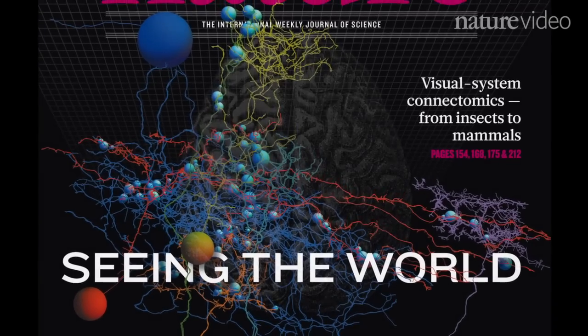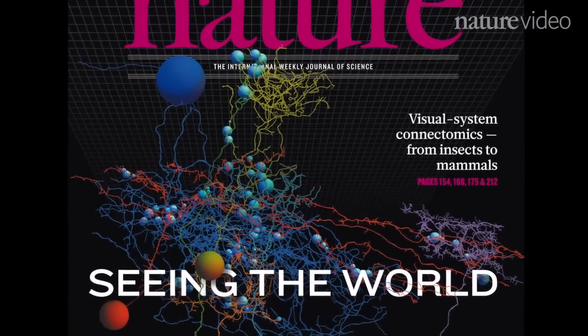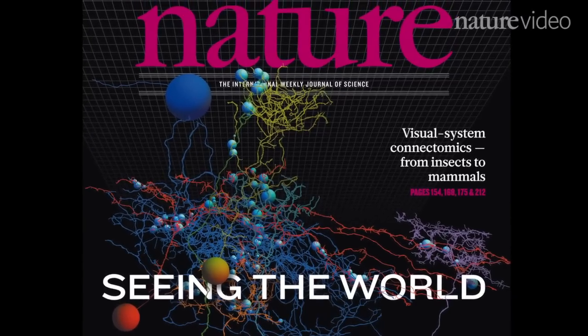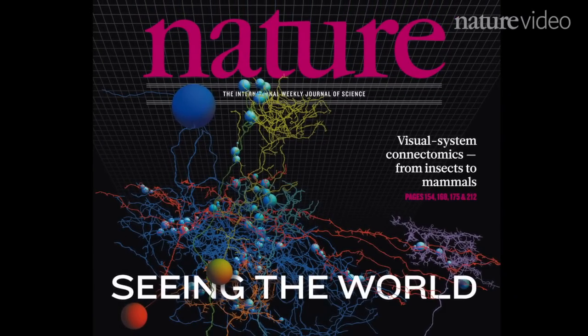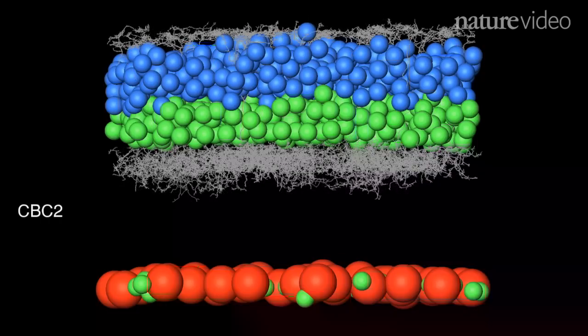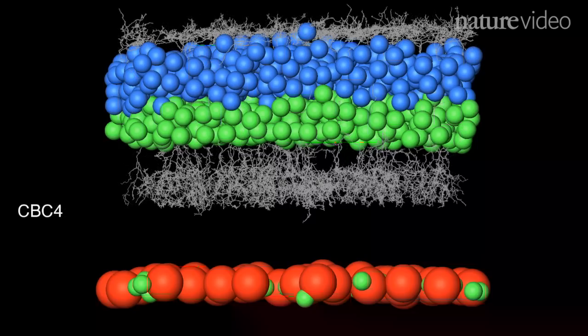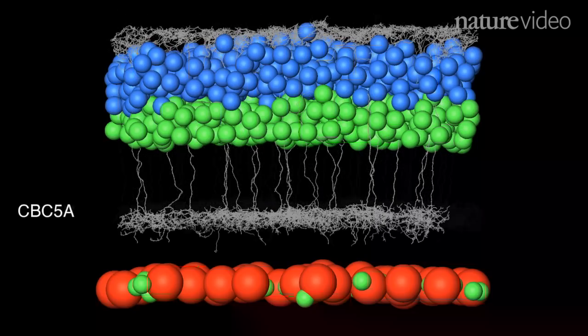Three studies published this week in Nature show that mapping brain tissue in great detail is giving us new insights into the visual system. The retina is the best studied bit of brain, yet this map surprised scientists by revealing a new type of cell that's evaded other detection methods because it's quite rare.